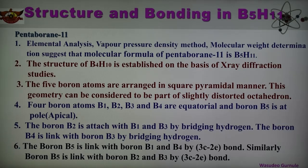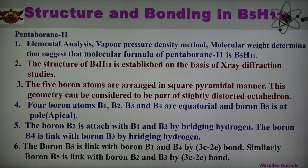Boron B5 is linked with boron B1 and B4 by a 3-center 2-electron bond. Similarly, B5 is also linked with boron B2 and B3 by a 3-center 2-electron bond. Boron B2 is attached with B1 and B3 by bridging hydrogen, and B4 is linked with B3 by bridging hydrogen. So this gives the details about the structure of B5H11. The XRD gives the detailed structure of this compound, with 5 boron atoms arranged in a square pyramidal manner.